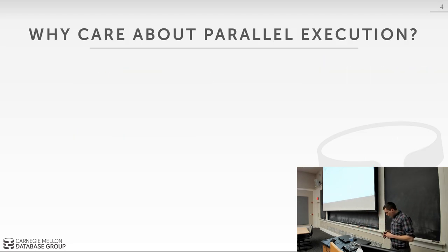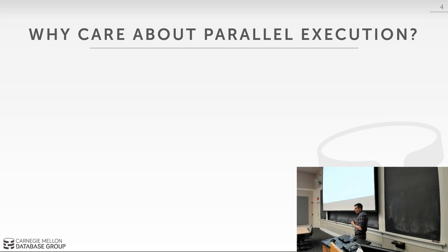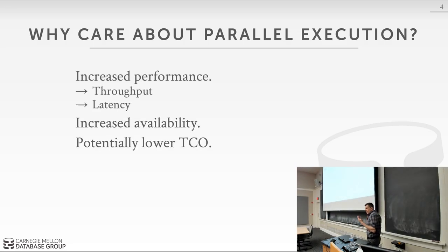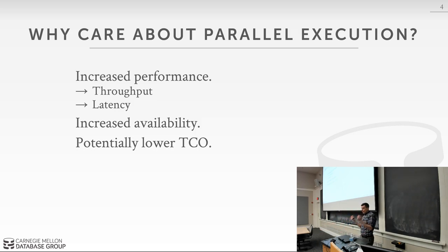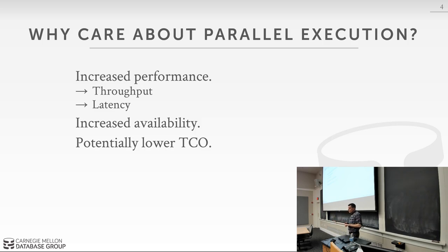Today we're going to talk about parallel execution. Everything we've talked about so far in the semester has mostly focused on single-threaded operations. We did talk about doing concurrent updates on the B-plus tree, but now we want to talk about how we're going to actually use queries in parallel and what optimizations we can do. Why would you want to run things in parallel? Because we get performance benefits. We'll be able to run queries more efficiently by breaking them up across multiple cores and multiple storage devices, getting faster latency and better response times.